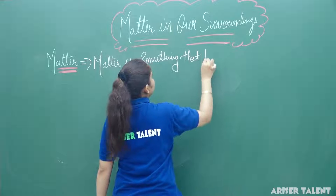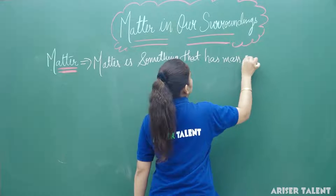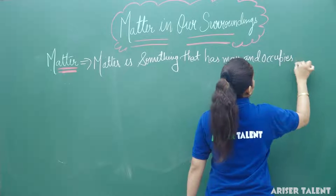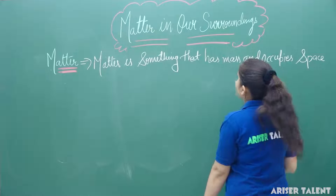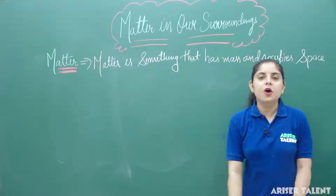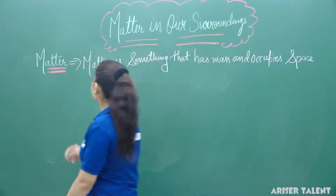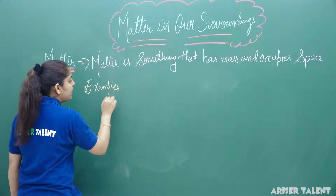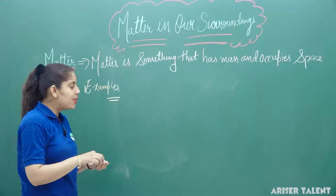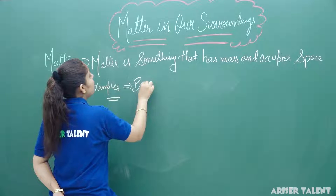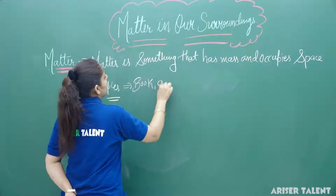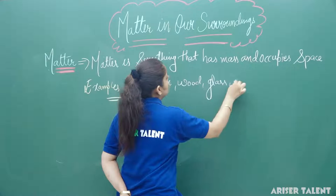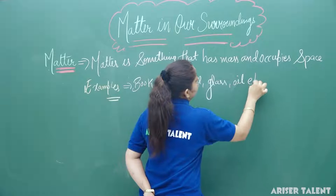If I ask you for examples of matter, you can say everything around us is matter. Even a book and air are examples of matter. So we can say that book, air, wood, glass, and oil are all matter.